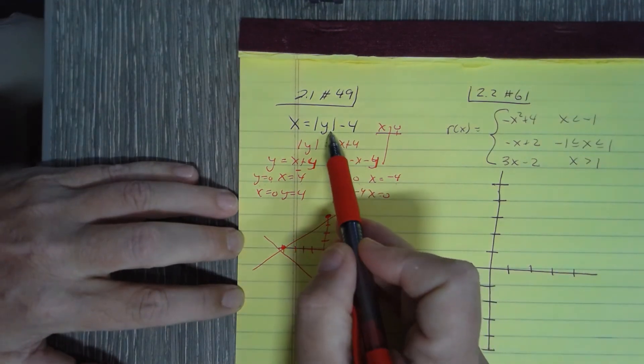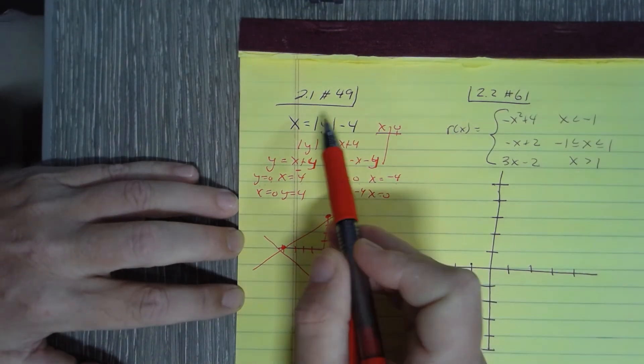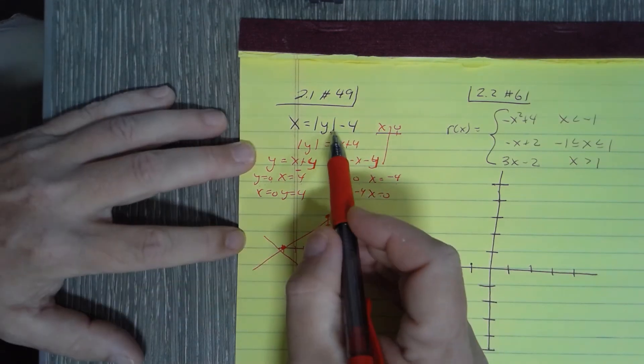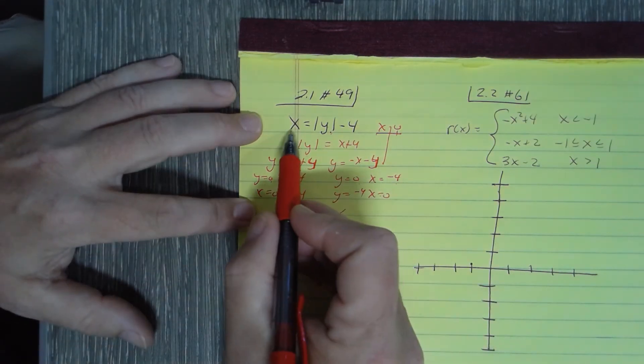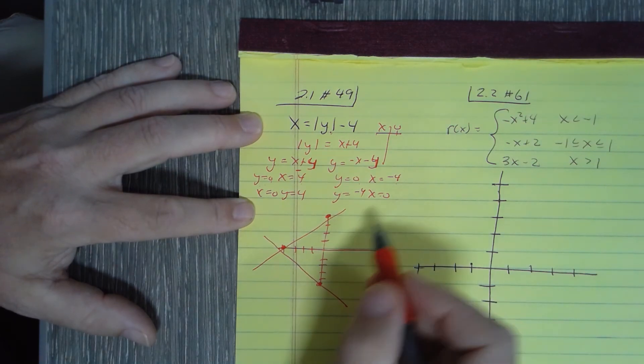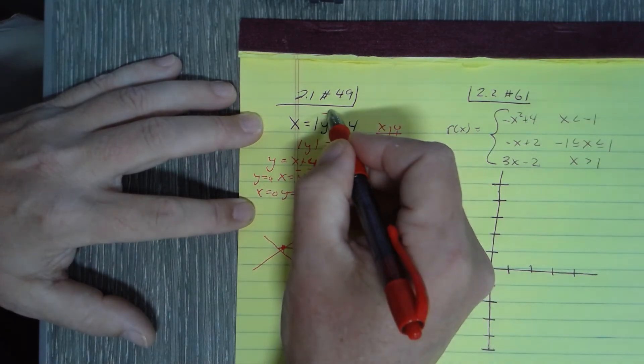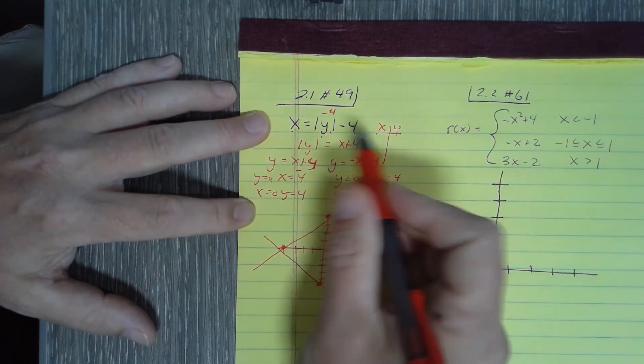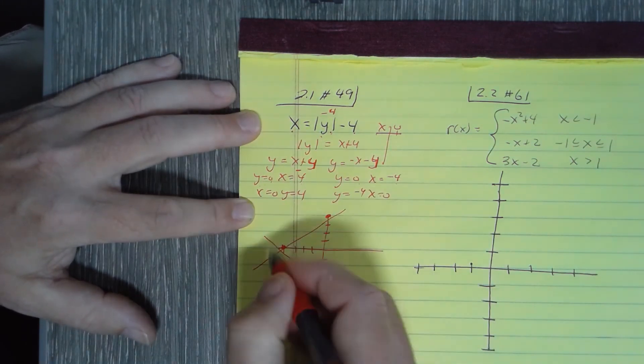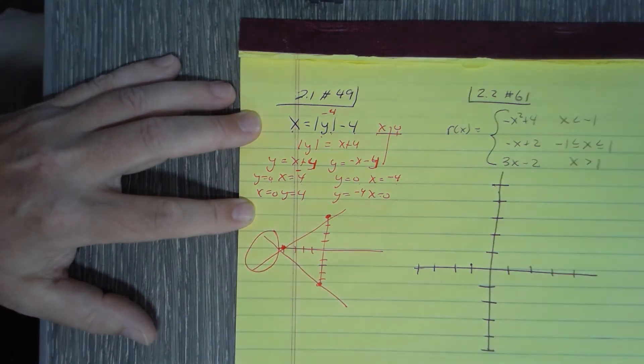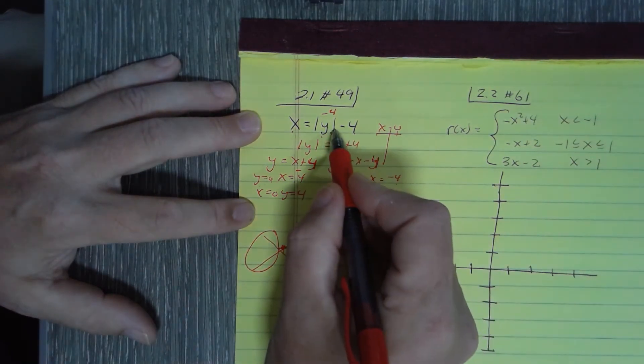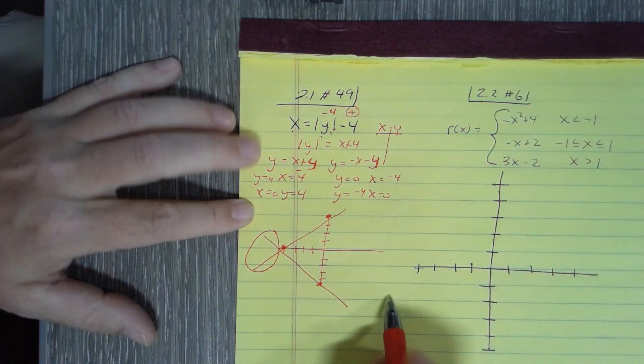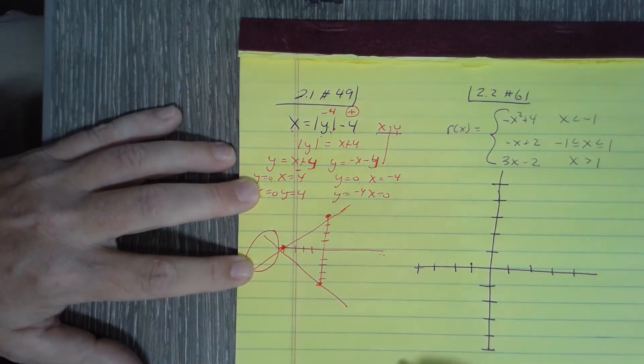But noticing that this is an absolute value, if I plug in anything into x that's bigger than negative 4, or it's going to make that equal zero. If y is negative 4, that's 4 minus 4 equals zero. I can't have anything over on this side because the absolute value tells me everything has to be positive from that y direction. So this part of the graph does not exist, but it's a V-graph going to the right.